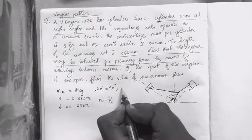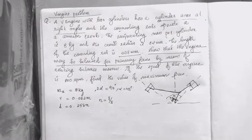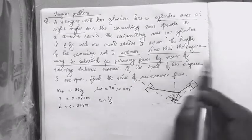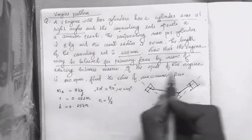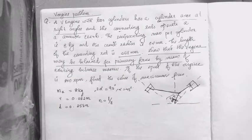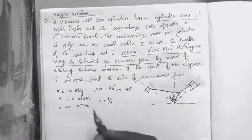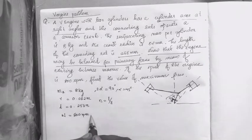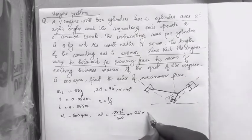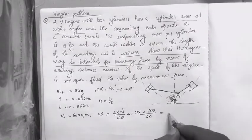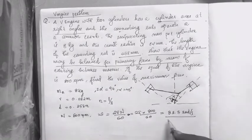From 2 alpha equals 90 degrees, we get alpha equal to 45 degrees. That gives us the primary unbalanced force and the secondary unbalanced force. The speed of the engine is 800 rpm, which is equal to 83.7 radians per second.